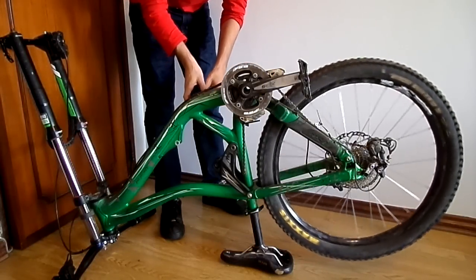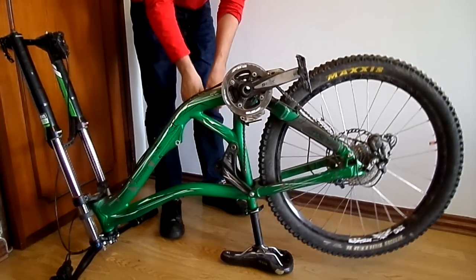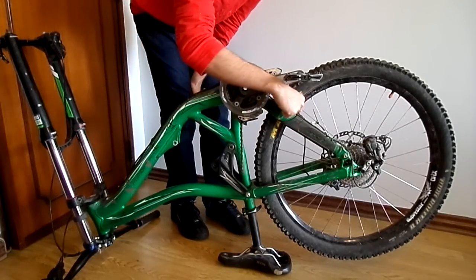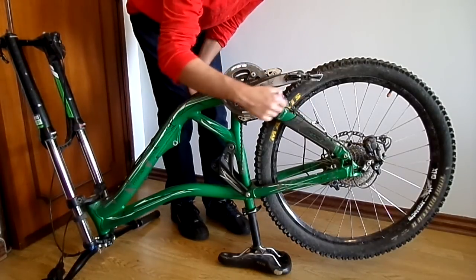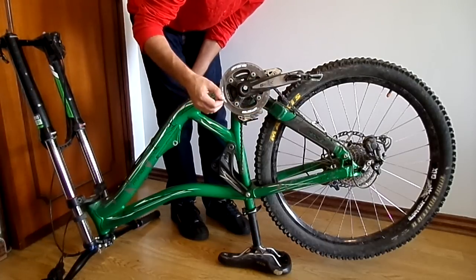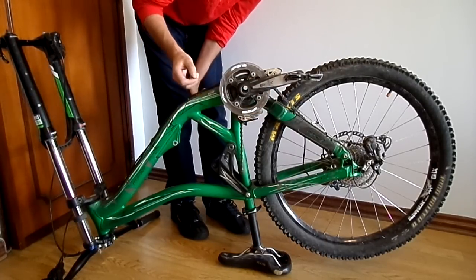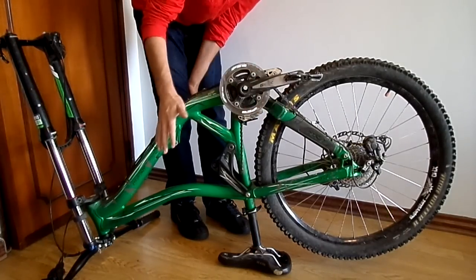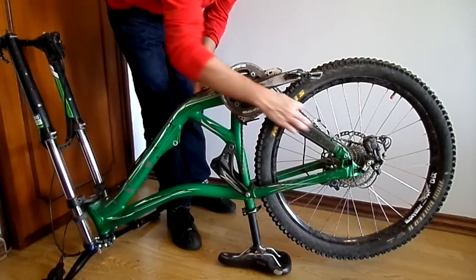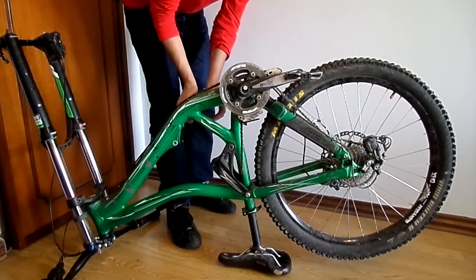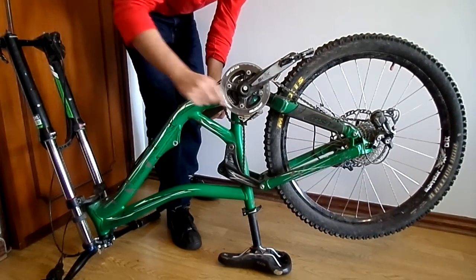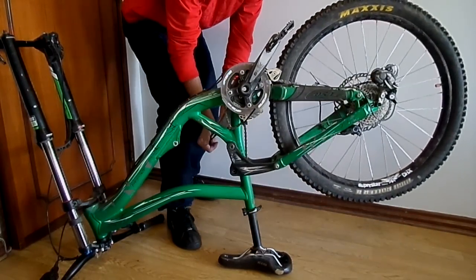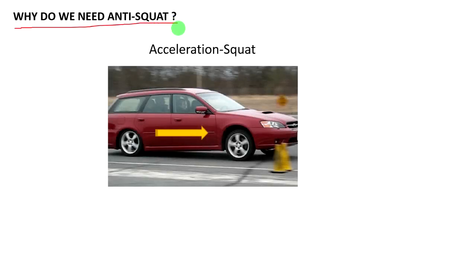This is the anti-squat. When you pedal and accelerate, you create tension in the chain. The tension in the chain will affect the suspension — it either compresses or extends the suspension. Anti-squat is as simple as that: it is the effect of chain tension on the suspension.